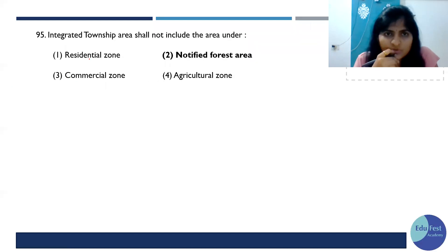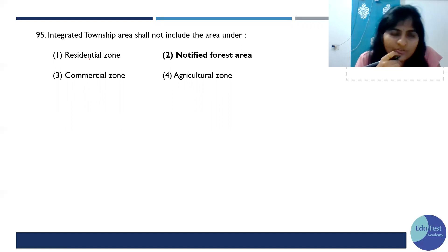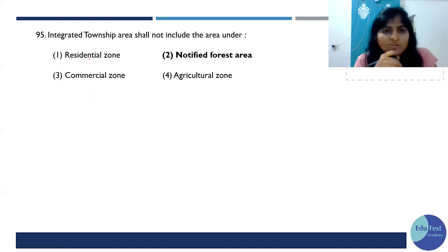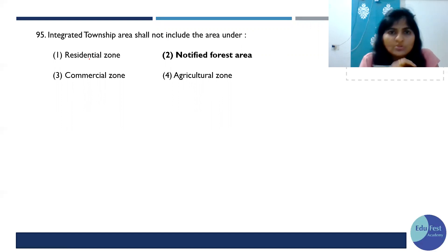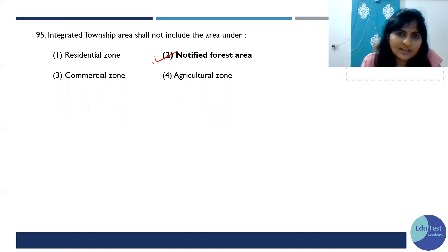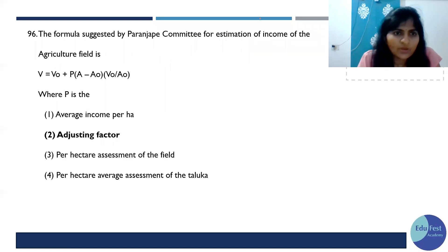Integrated township area should not include residential, commercial, or agricultural areas. It also should not include notified forest or private forest areas.